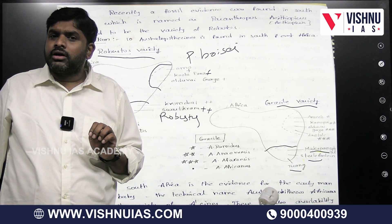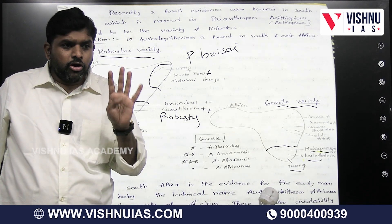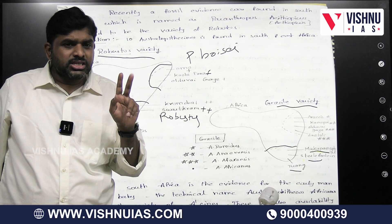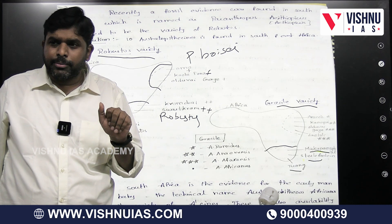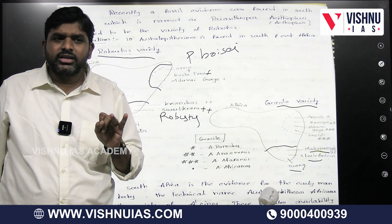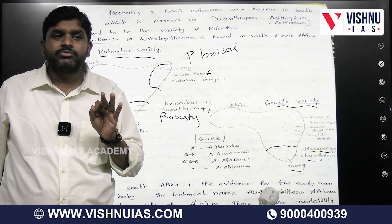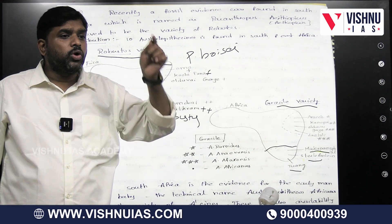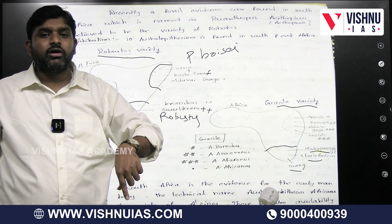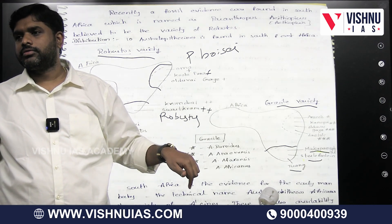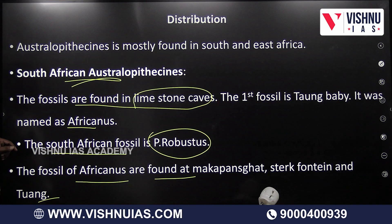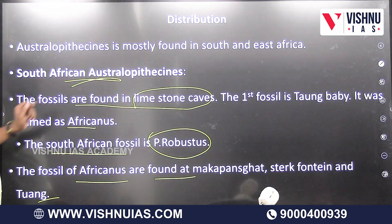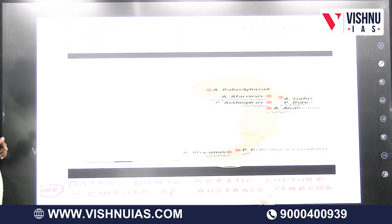Coming to the Gracile variety — we have four: Anamensis, Afarensis, Africanus, and Ramidus. Anamensis, Afarensis, and Ramidus are found in East Africa. Only Africanus is found in South Africa. These are the South African Australopithecines.